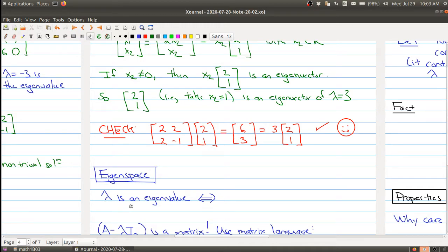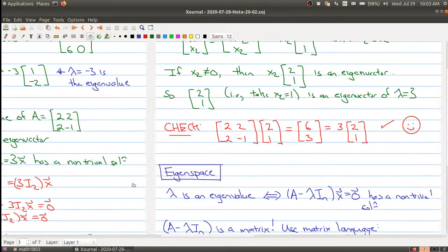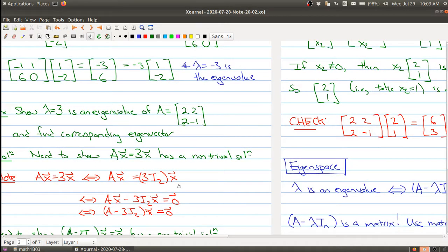So lambda is going to be an eigenvalue if and only if you look at the matrix A minus lambda times the identity matrix of size n, times the vector x equals 0. So you have a homogeneous system of linear equations that has a non-trivial solution. So deciding whether something has an eigenvalue is deciding whether this particular matrix has a non-trivial solution.